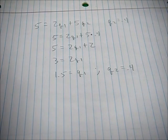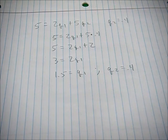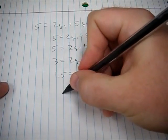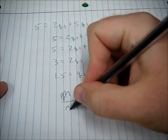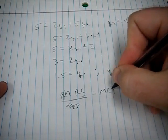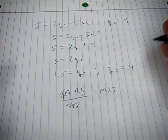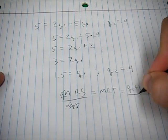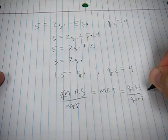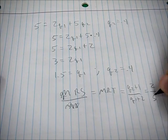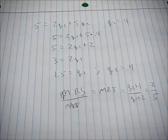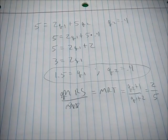That was the calculus version. The algebraic version uses the marginal rate of substitution: MRS equals MRT. The MRS — the ratio of marginal utilities — is (q2 + 1) / (q1 + 2), and we set that equal to the MRT, which is the price ratio two over five. You can then use the identical algebraic process to arrive at the same solution.